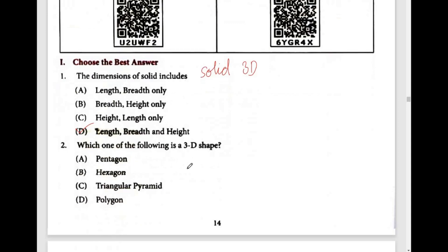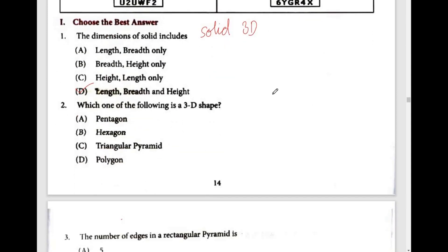Which one of the following is a 3D shape? Pentagon — this is mostly a 2D shape. 2D shapes have a flat surface. Pentagon is a 5-sided figure, it is a flat sheet. Triangular pyramid — this is a triangle base, 3-sided pyramid. That is a triangular pyramid. The answer is option C, a triangular pyramid is a 3D shape.